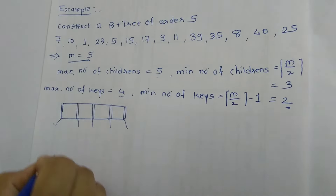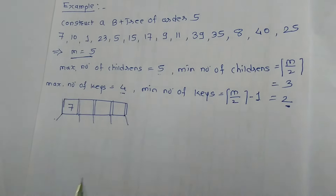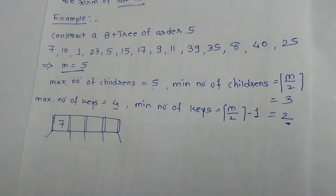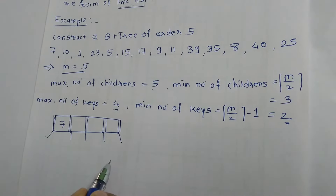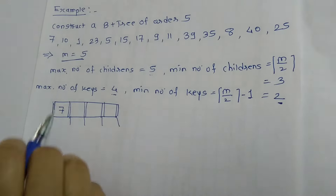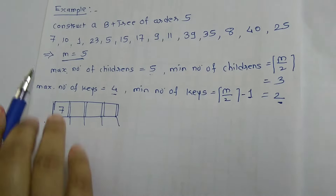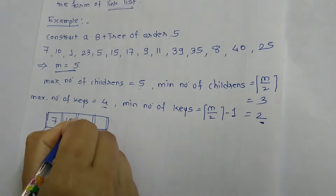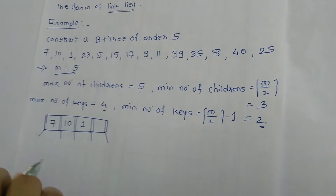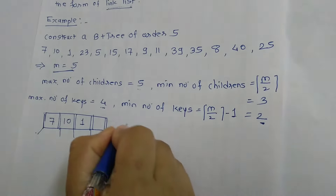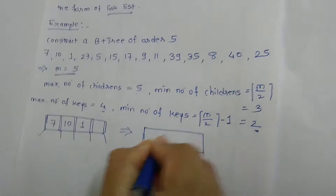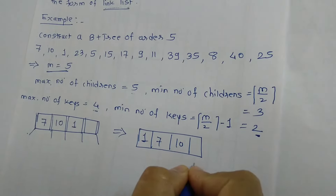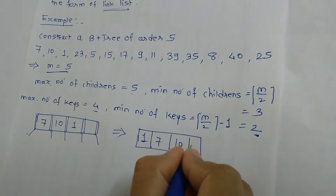The first key is 7, so I can store 7 here directly. One thing to remember in B plus tree: data is in sorted order. Next is 10, so I can store 10 here directly. Next element is 1, so 1 will come at the first position because of sorted order — so 1, 7 and 10. One more position is there to store the next key, which is 23, so I can store it here.